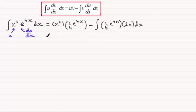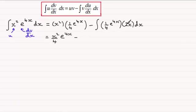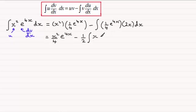The next line is to clean up. We've got x squared times a quarter, which looks better as x squared over 4, times e to the power 4x. Then we've got minus, and 2 times a quarter is 2 quarters, which is a half. Pull the half out the front of the integral, being a constant, and then we've got the integral of x·e to the power 4x with respect to x.